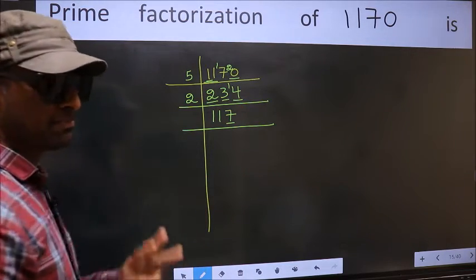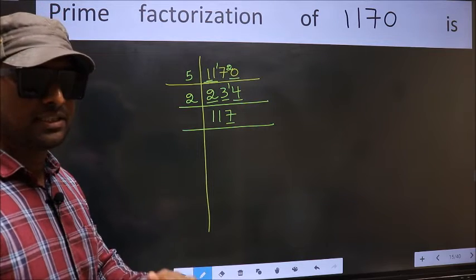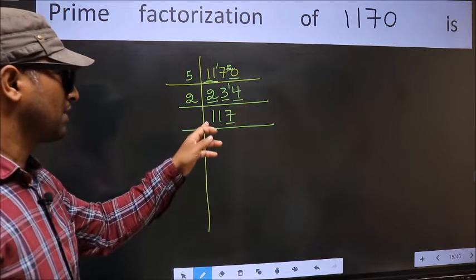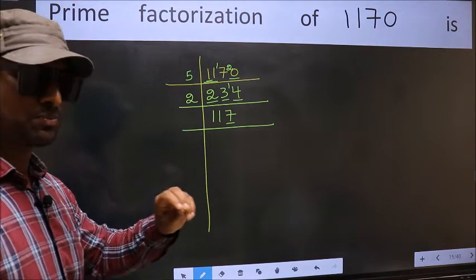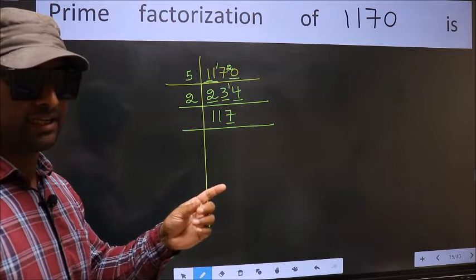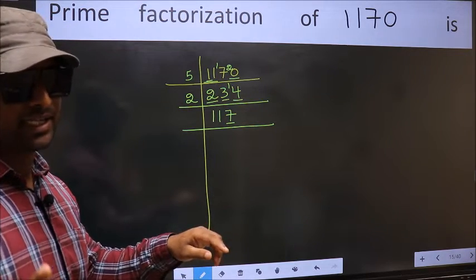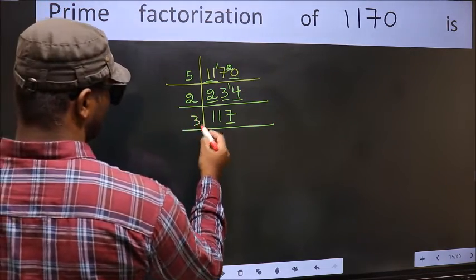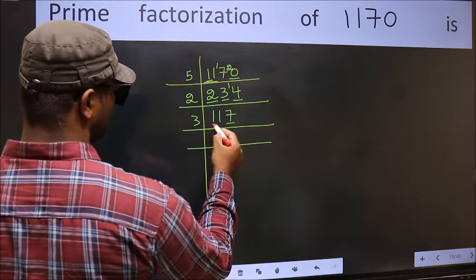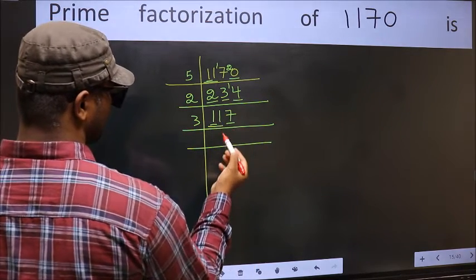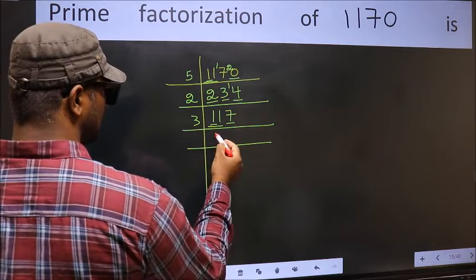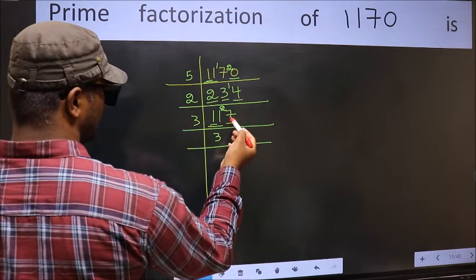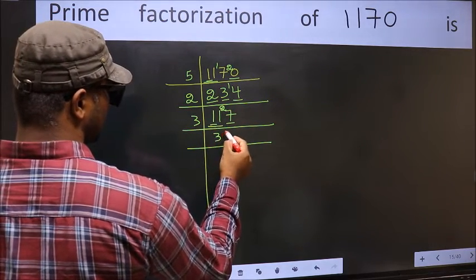Next prime number is 3. To check divisibility by 3, we add the digits: 1 plus 1 plus 7 gives 9. Is 9 divisible by 3? Yes, so this number is also divisible by 3. Take 3 here. First number 1 is smaller than 3, so take 2 numbers: 11. A number close to 11 in the 3 table is 3 times 3 is 9. 11 minus 9 is 2, carry forward to get 27. We get 27 in the 3 table at 3 times 9.